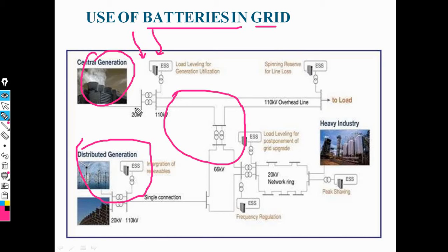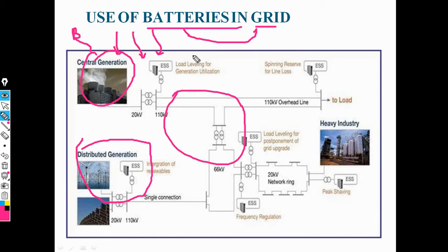In batteries we need an inverter, because electricity is stored in the form of DC. This DC voltage is converted into AC and then transferred back to the generation side. Finally, batteries are connected to the whole system — this concept is called batteries in the grid, connected via wind energy and photovoltaic cell energy storage systems.